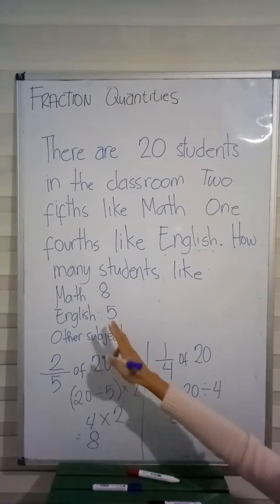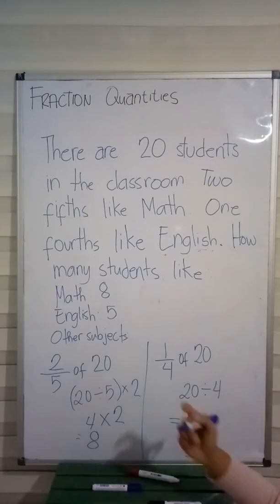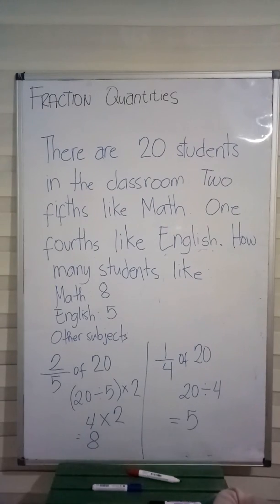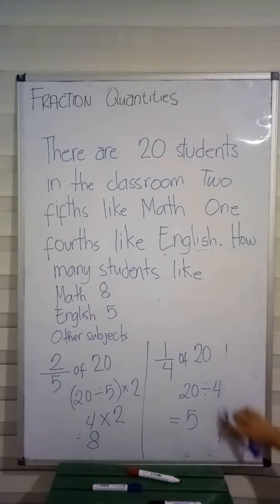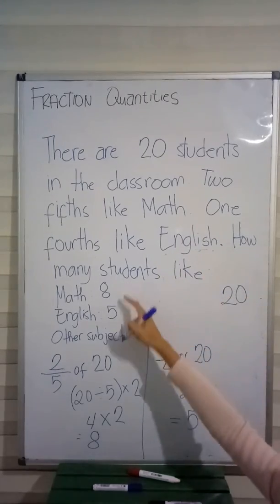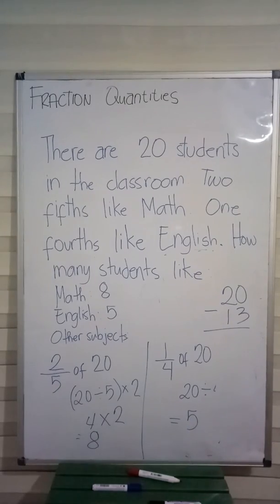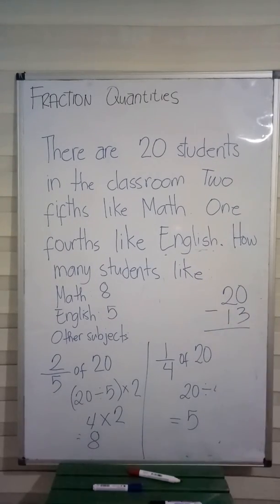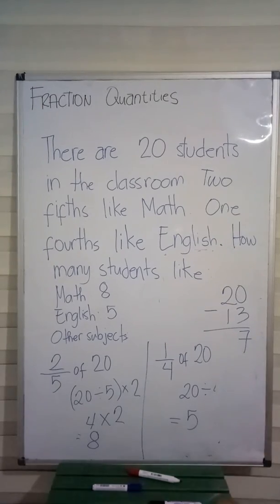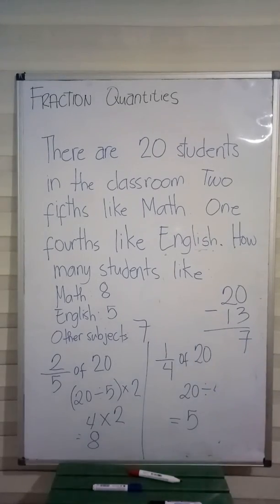Now for other subjects, we add 8 plus 5, which is a total of 13. The total number of students is 20. Since 13 already like math or English, we take away the 13 from the 20. So, 20 minus 13 equals 7. Therefore, there are 7 students who like other subjects.